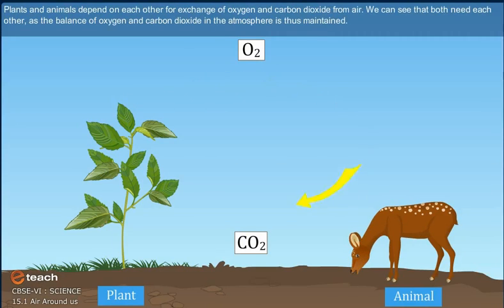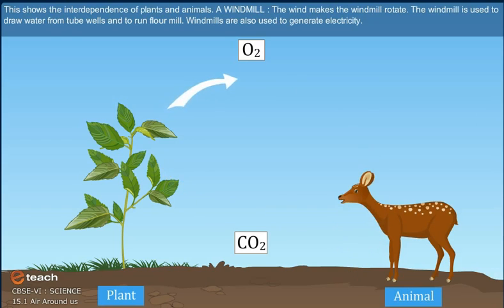Plants and animals depend on each other for exchange of oxygen and carbon dioxide from air. We can see that both need each other, as the balance of oxygen and carbon dioxide in the atmosphere is thus maintained. This shows the interdependence of plants and animals.